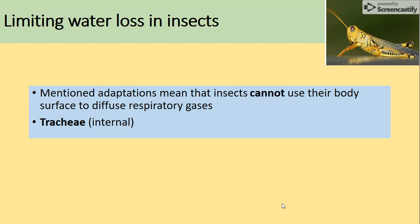All those adaptations are here to prevent water loss, but also insects cannot use the body surface to diffuse respiratory gases - that's another important piece of information to remember. So gas exchange is not taking place through the surface; it's taking place through the spiracles.